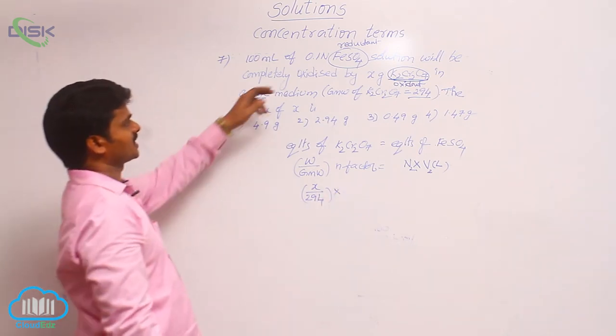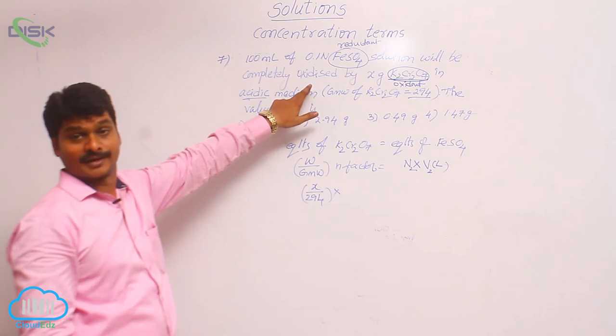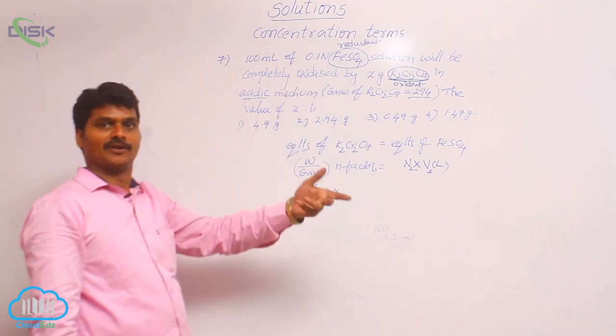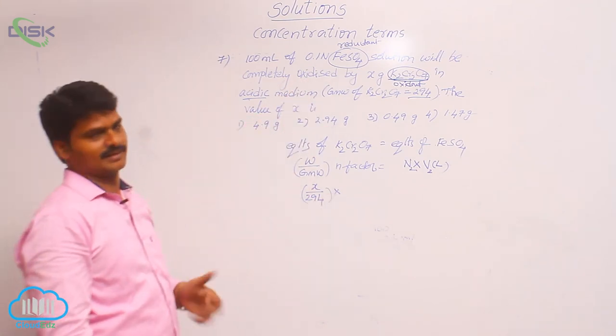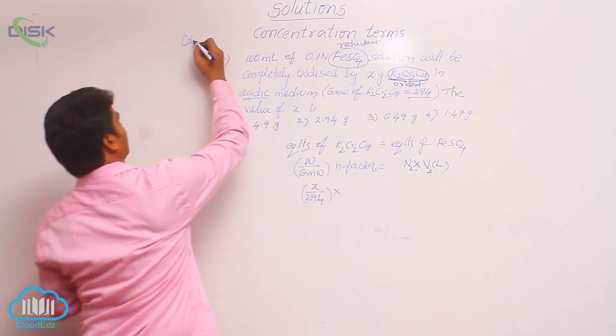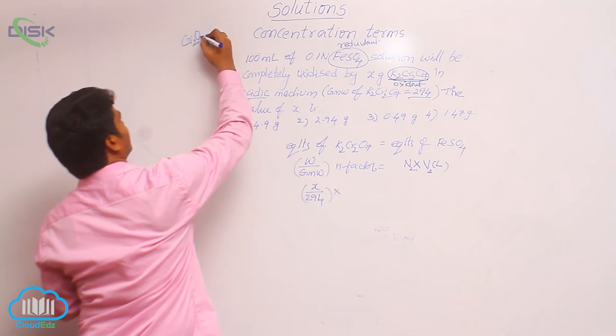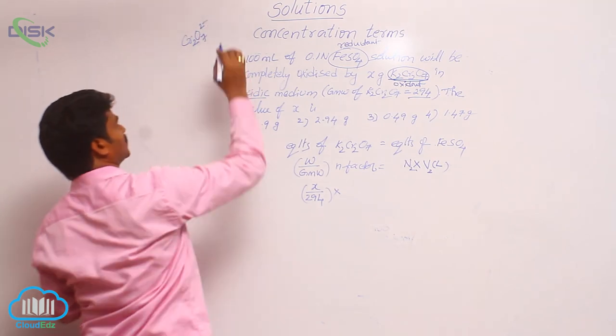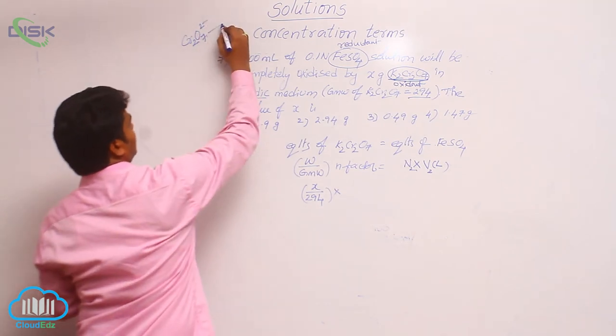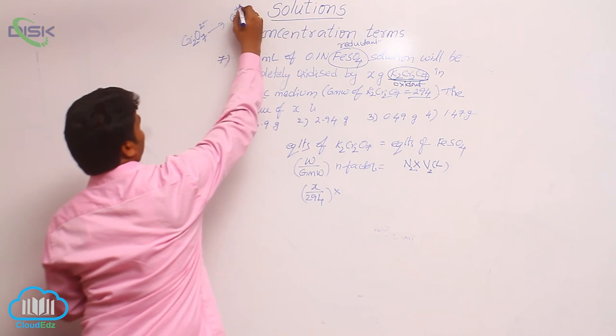Potassium dichromate equivalent weight, how to calculate? In potassium dichromate, there is dichromate ion Cr2O7 2-. It changes to chromium +3 in acidic medium.